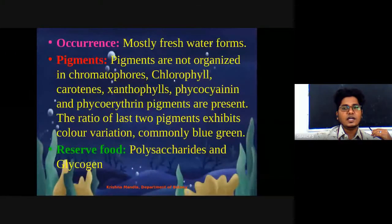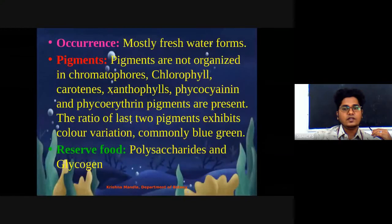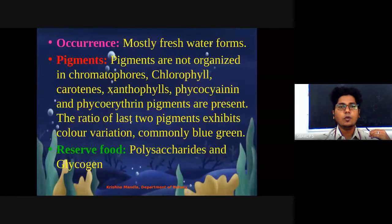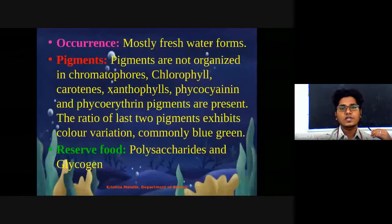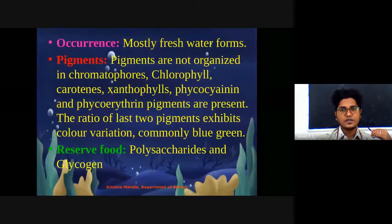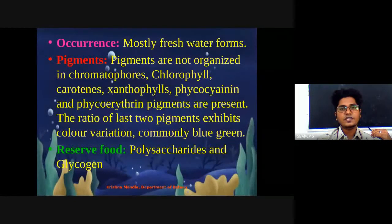They contain chlorophyll, carotene, xanthophyll, phycocyanin, and phycoerythrin — different pigments in different ratios. The most dominating pigments are chlorophyll and phycocyanin. Because of the phycocyanin, they appear blue-green in color. So these Myxophyceae are also termed as blue-green algae.